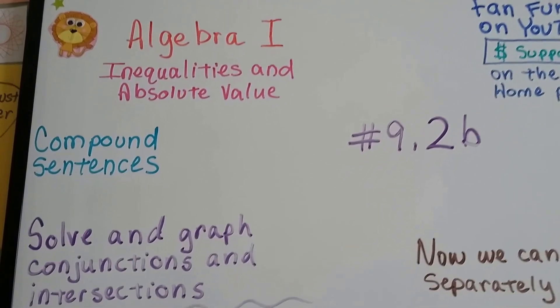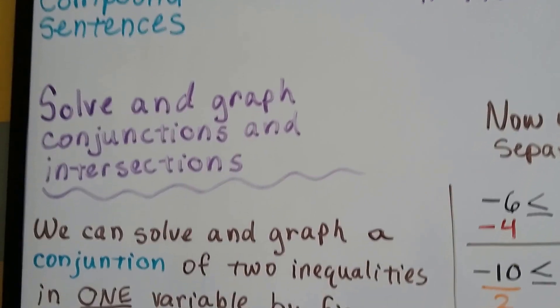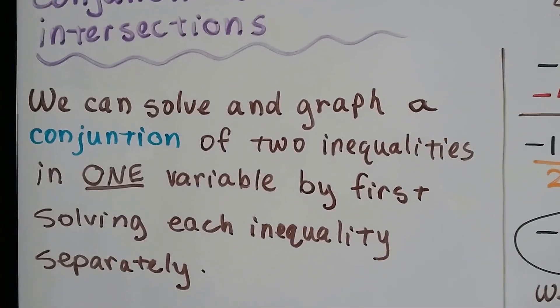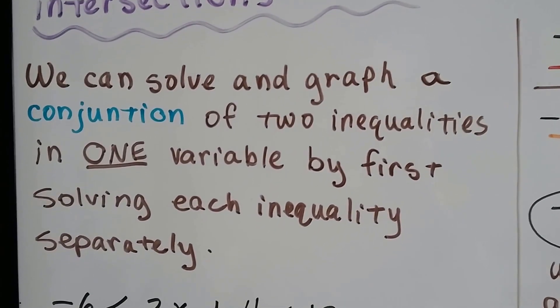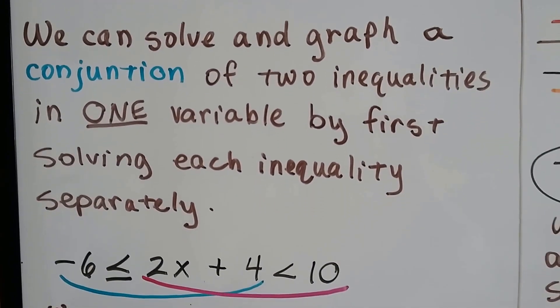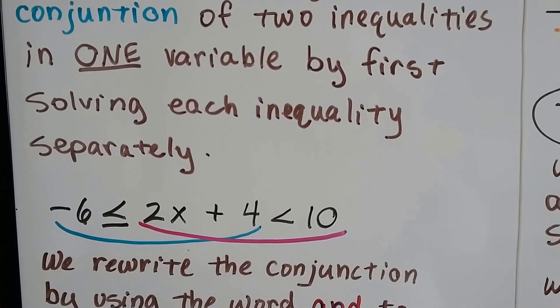Algebra 1 9.2b. Solve and graph conjunctions and intersections. We can solve and graph a conjunction of two inequalities in one variable by first solving each inequality separately.